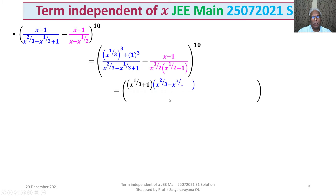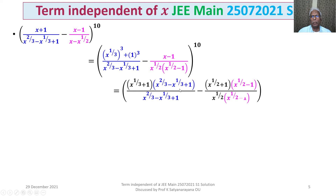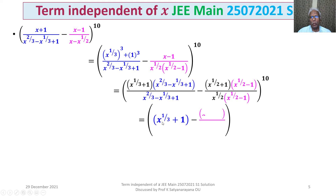Now the factorization for a³ + b³ is written as (a + b)(a² − ab + b²), over the denominator as it is. And x minus 1 is written as (x^(1/2) + 1)(x^(1/2) − 1), and the common factors cancel off. After cancellation we get x^(1/3) + 1 from the first part.